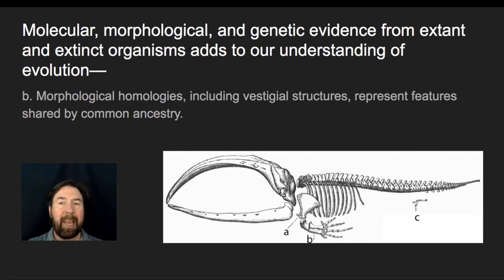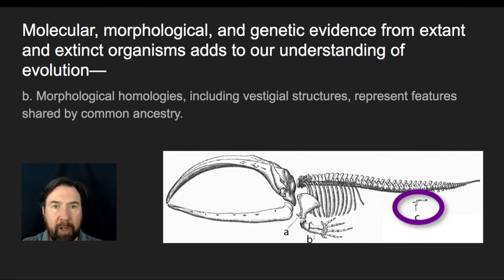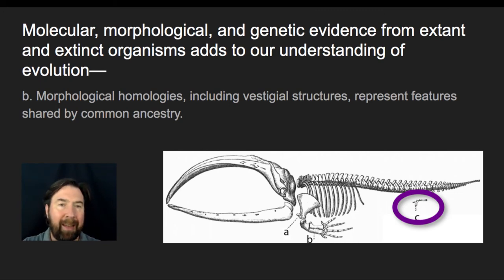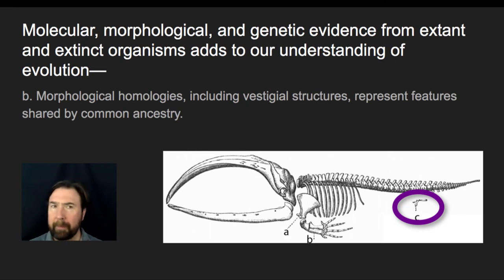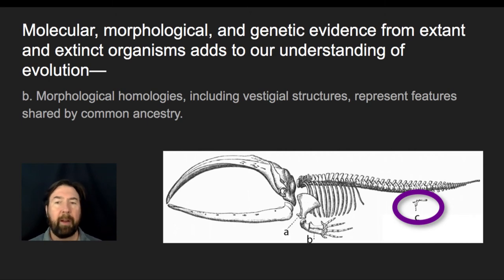Structure C is a small, diminutive vestigial whale hip and hind leg. As we all know, whales don't really have hind legs — they are in the ocean and they swim. Finding a structure like a vestigial hip bone provides evidence that this modern-day whale is a descendant of an organism that would have been a tetrapod with hind limbs.